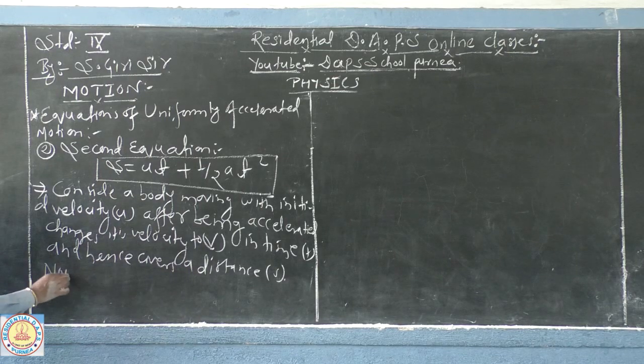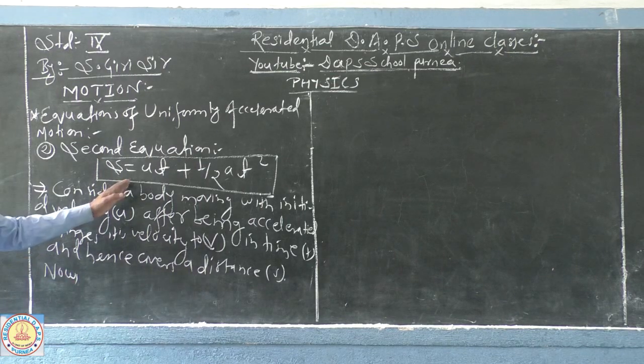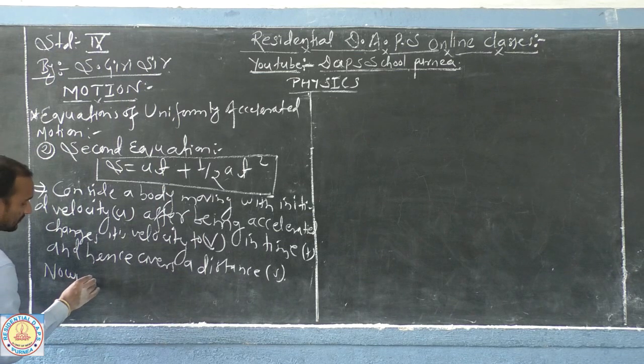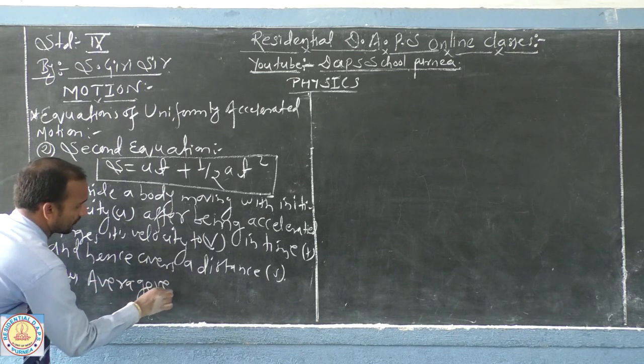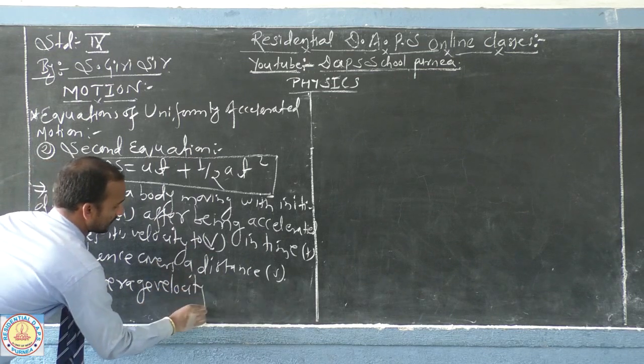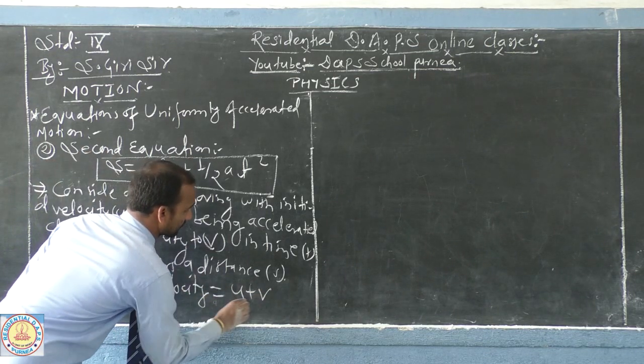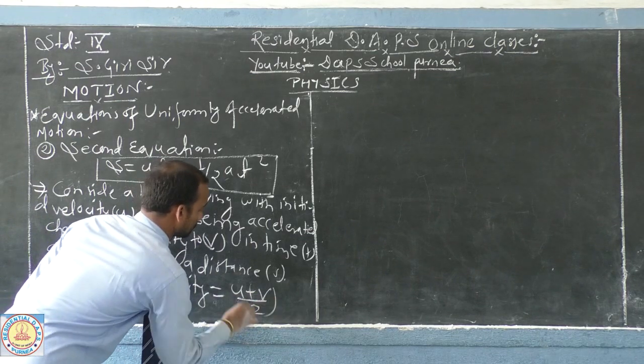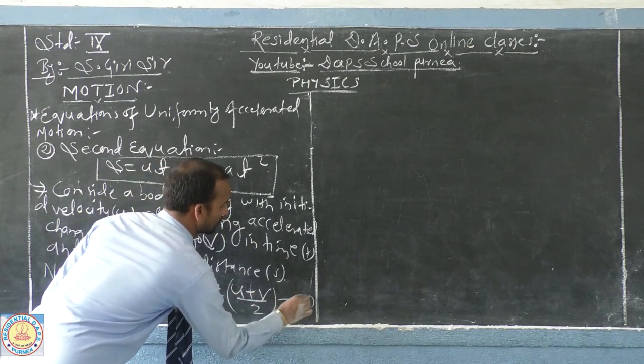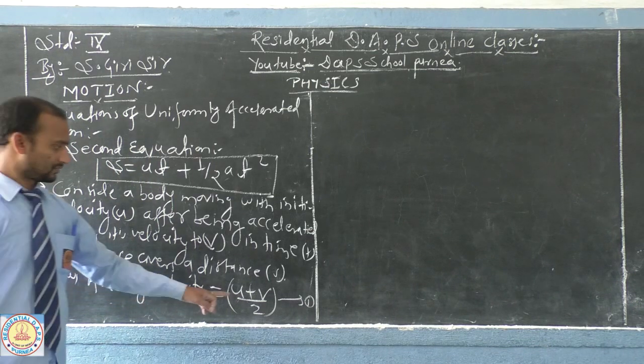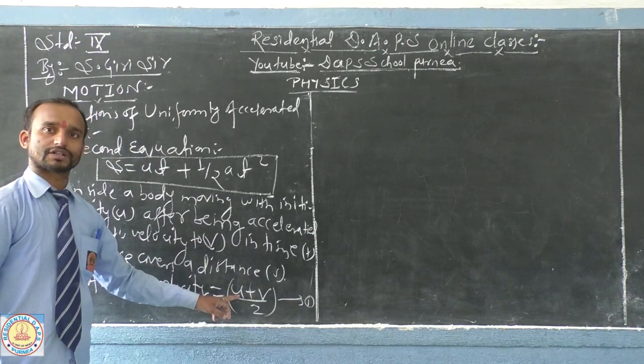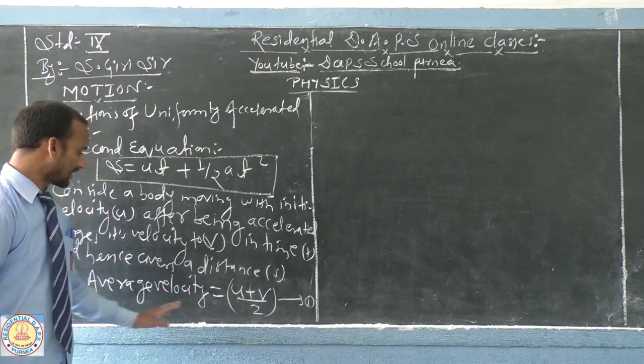Now, we will write here average velocity equal to u plus v by 2. We know this means when you take the mean of both velocities, then you will get the average velocity.